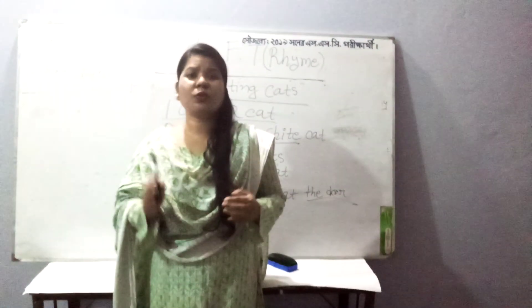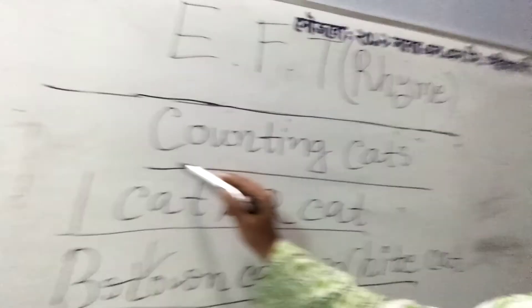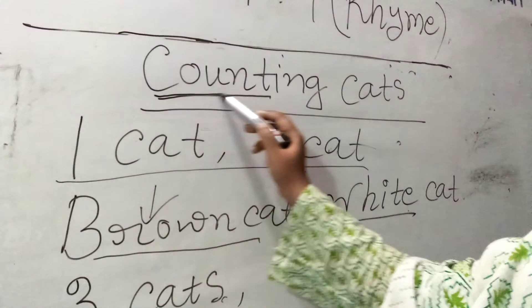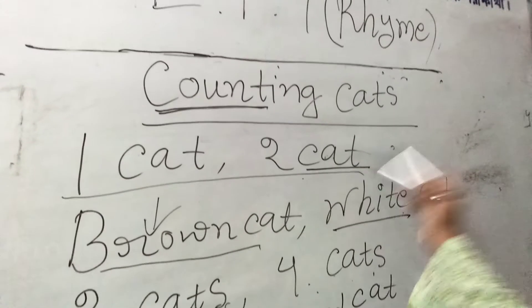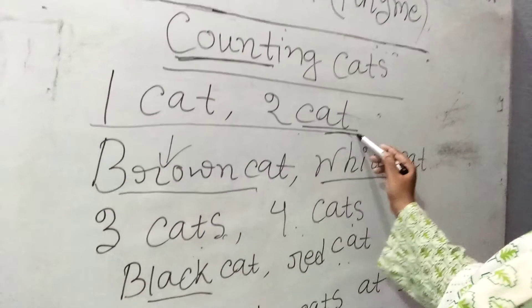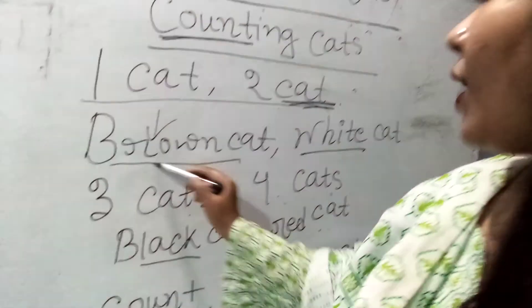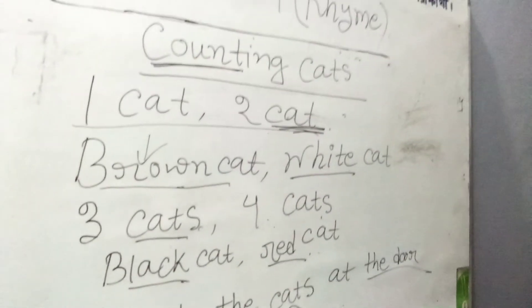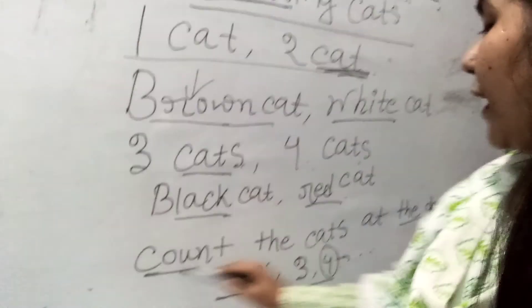Now let's note some really important and effective words. The first is 'counting.' We have already seen the word 'count' numerous times. Then 'cat' — very common in your book. Then 'brown,' 'white,' 'black,' 'red' — underline every color noun because these words indicate color and are names of colors. And finally 'door.'